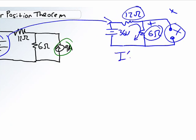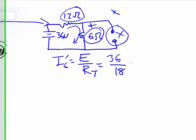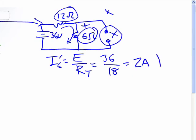And all the current is going to go through there. So I prime 6 is going to be equal to the applied voltage divided by the total resistance. In this case, it's 36 volts divided by 18, which is 12 plus 6, 2 amps going down.